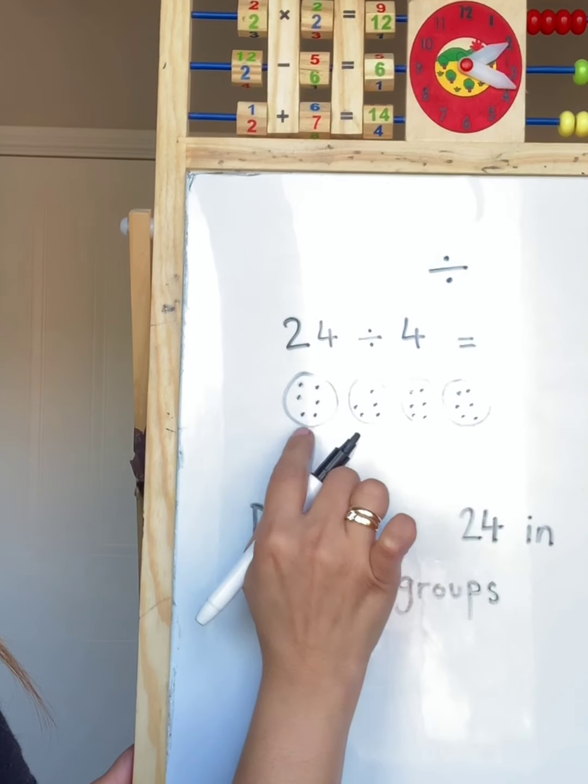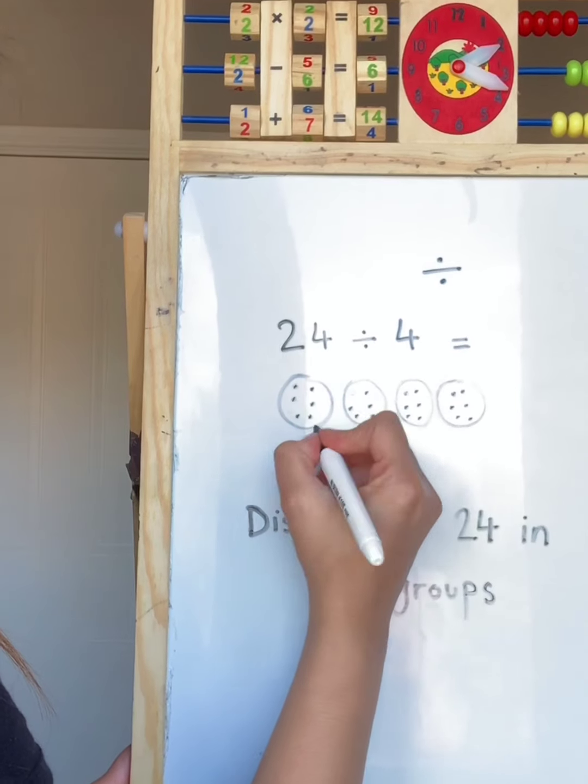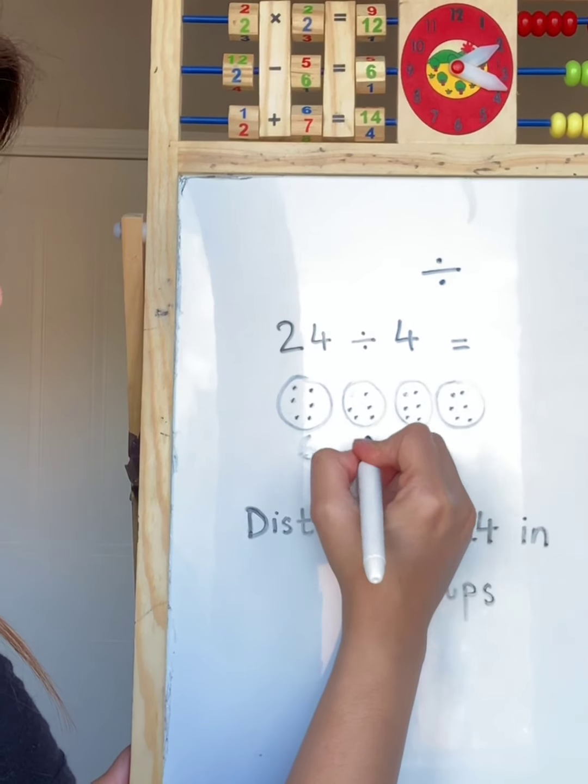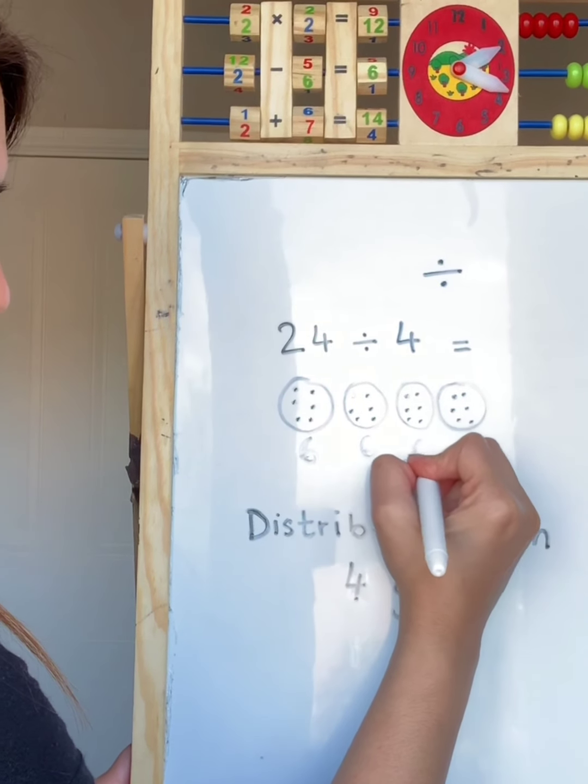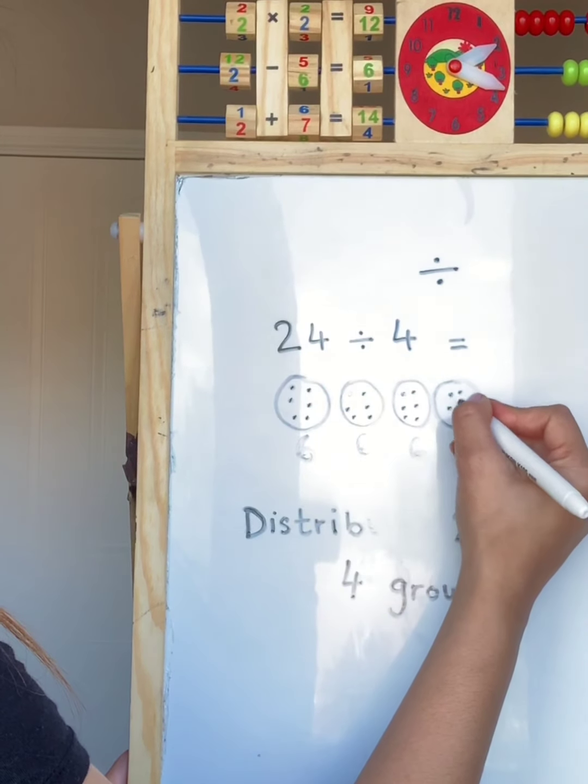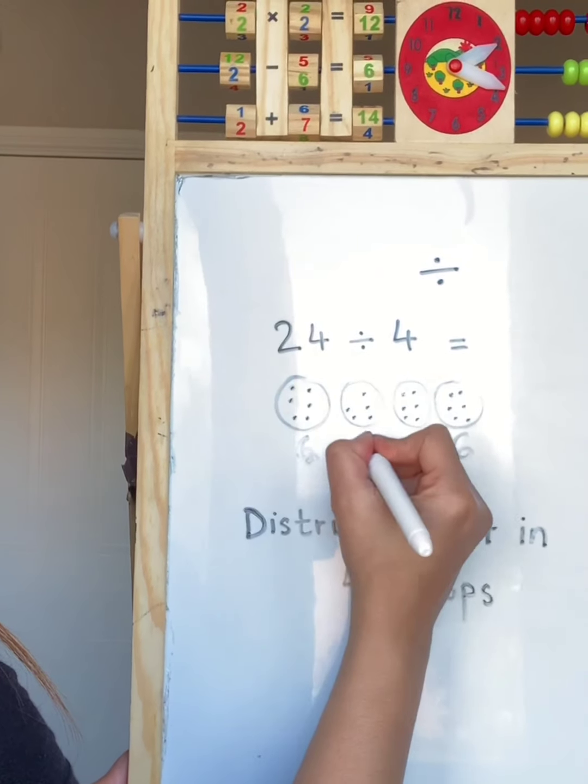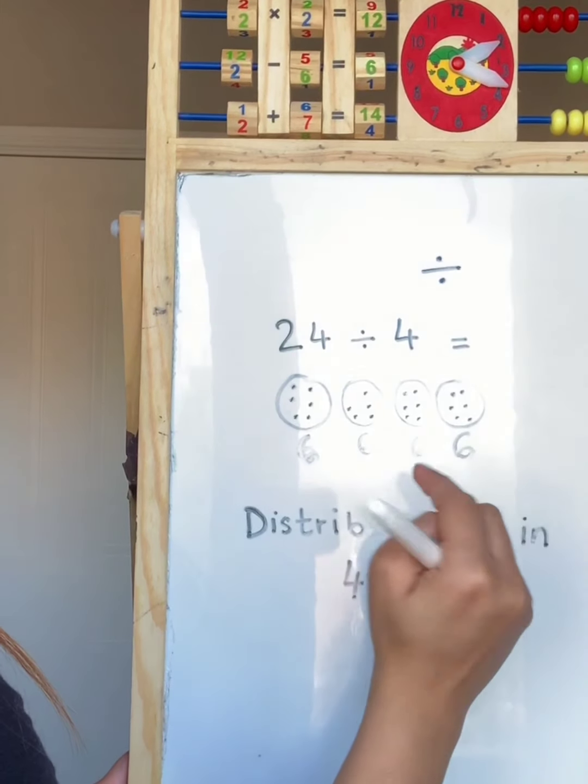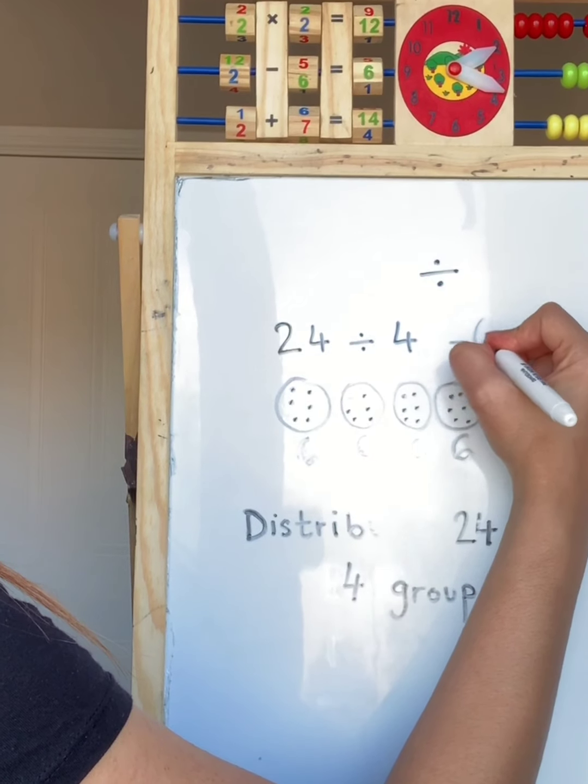Let's see how much friend 1 has. 1, 2, 3, 4, 5, 6. Let's check how many in this one. 1, 2, 3, 4, 5, 6. Next one. 1, 2, 3, 4, 5, 6. And the next one. 1, 2, 3, 4, 5, 6. So I have shared 24 with 4 friends and everyone has got 6 each after sharing. My answer is 6.